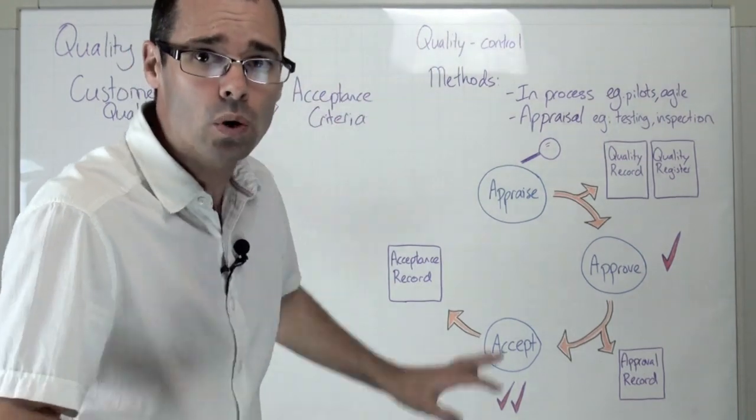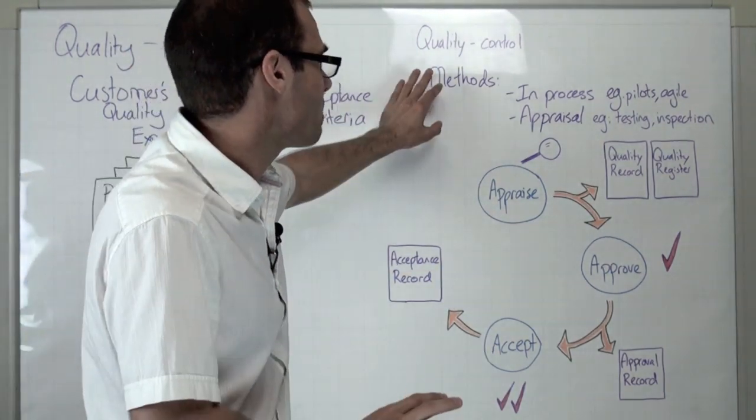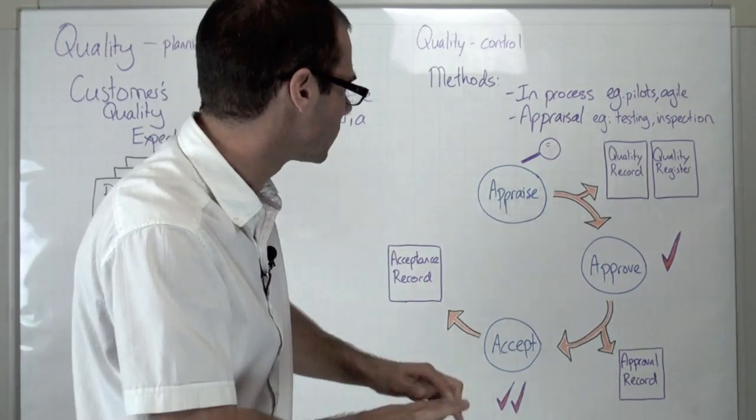In the quality control aspect of Prince2, we've got the methods. There are two methods: in-process and appraisal.